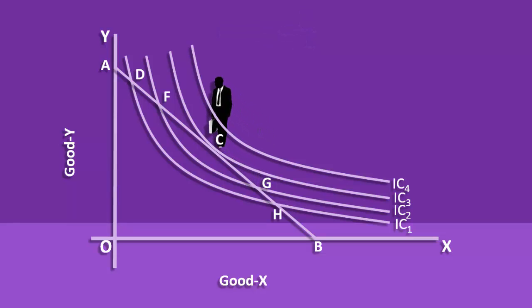He rearranges his budget and substitutes Y for X. At last, he reaches point C, which is on Indifference Curve 3. Here, MRS of X for Y is equal to the price ratio. Even if the consumer wants to move to Indifference Curve 4, he cannot, because it lies to the right of the price line and is beyond his reach. So, Indifference Curve 3 is the maximum possible Indifference Curve the consumer can reach, given his budget and the prices of the two goods.